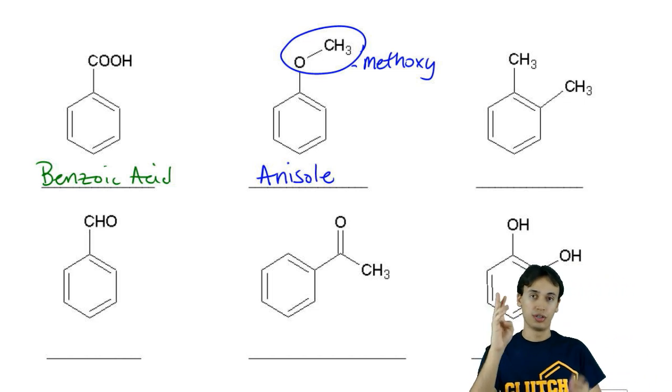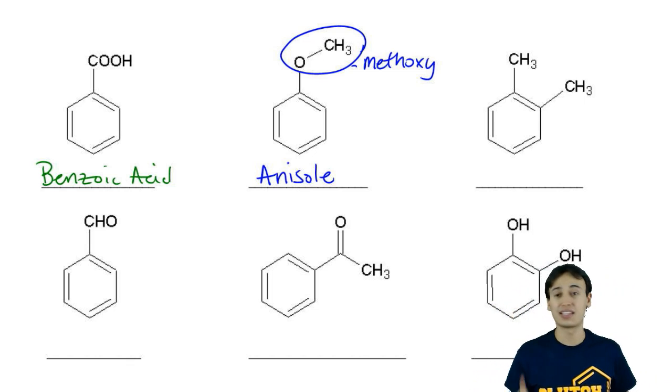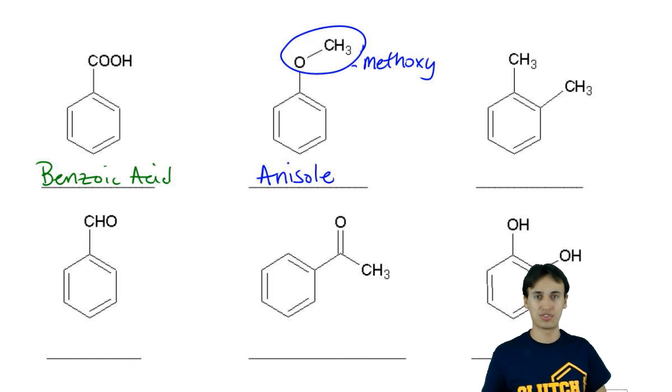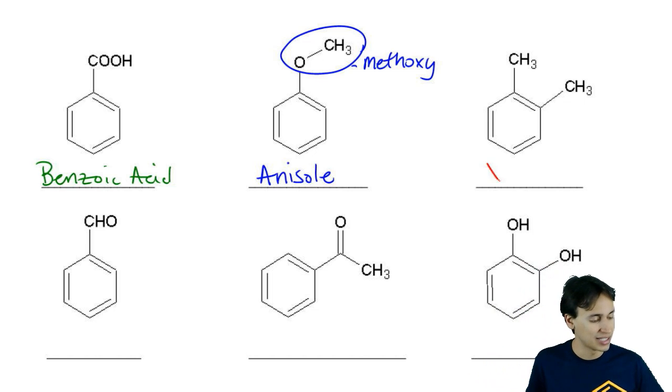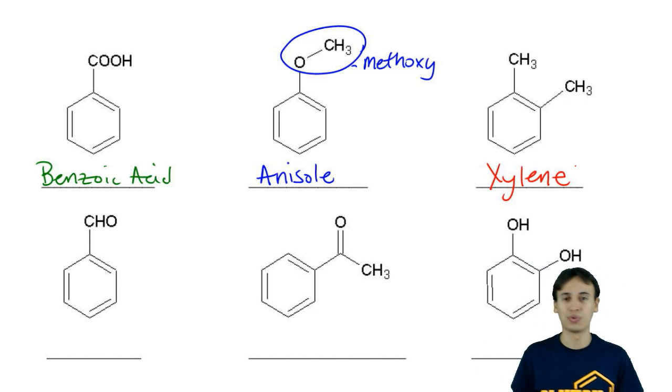If you see two methyl groups, that's not toluene anymore. So it would be wrong to call this methyl toluene. Instead, we would call this xylene. See, I told you they're weird.